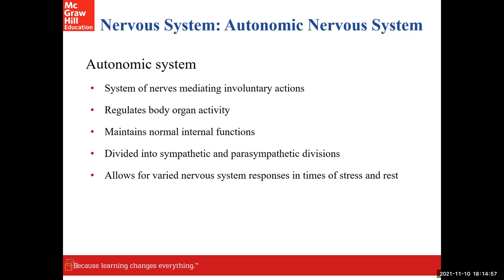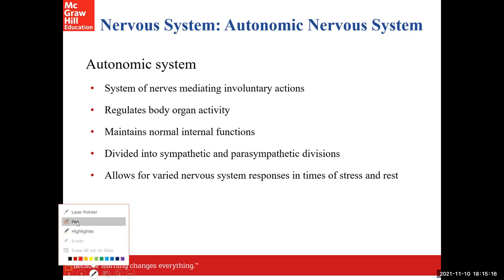When we talk functionally and break down our nervous system, we have the somatic nervous system and the autonomic nervous system. Tonight we're going to start to learn what the autonomic nervous system is and how it functions. When you think of the autonomic nervous system, think of autopilot — stuff you wouldn't have to worry about.